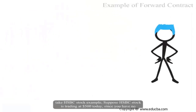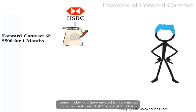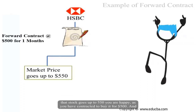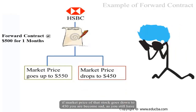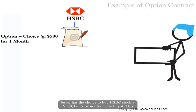Let's take an HSBC stock example. Suppose HSBC stock is trading at $500 today. Since you have no money today, you enter into a contract to buy HSBC stock at $500 after one month. You will face two conditions: first, if the market price goes up to $550, you are happy as you contracted to buy it for $500. Second, if the market price goes down to $450, you will be sad as you still have to buy it at $500. So in this scenario, an option plays a crucial role — it gives you a choice.